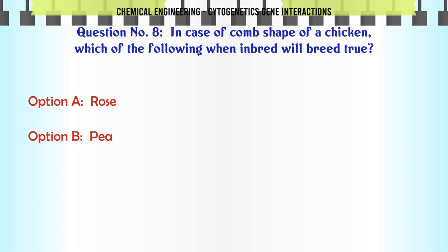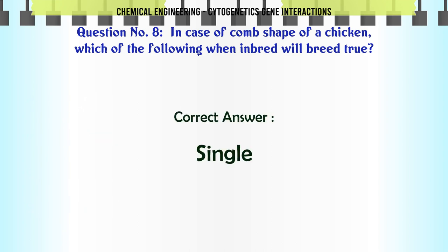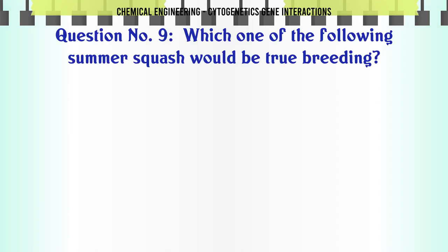In the case of comb shape of a chicken, which of the following when inbred will breed true? A. Rose, B. Pea, C. Walnut, D. Single. The correct answer is Single.